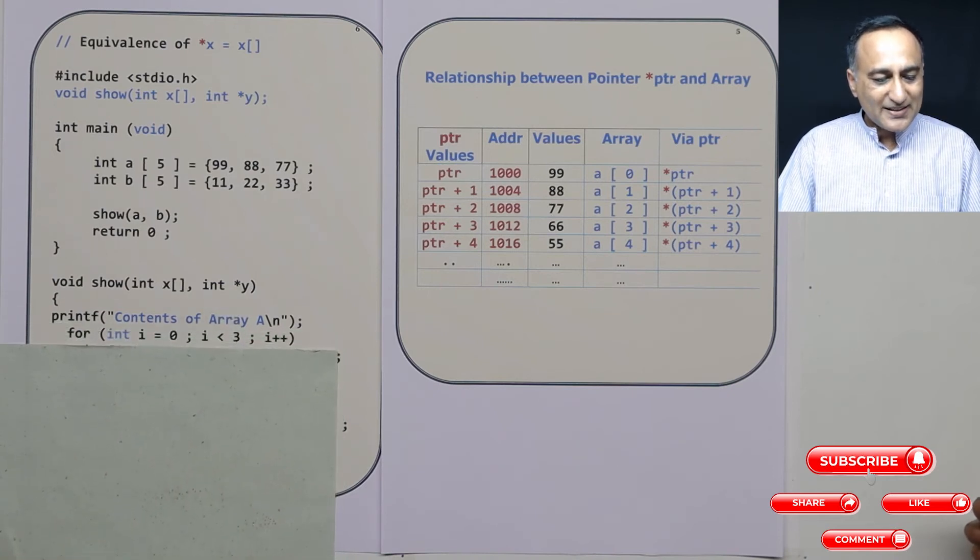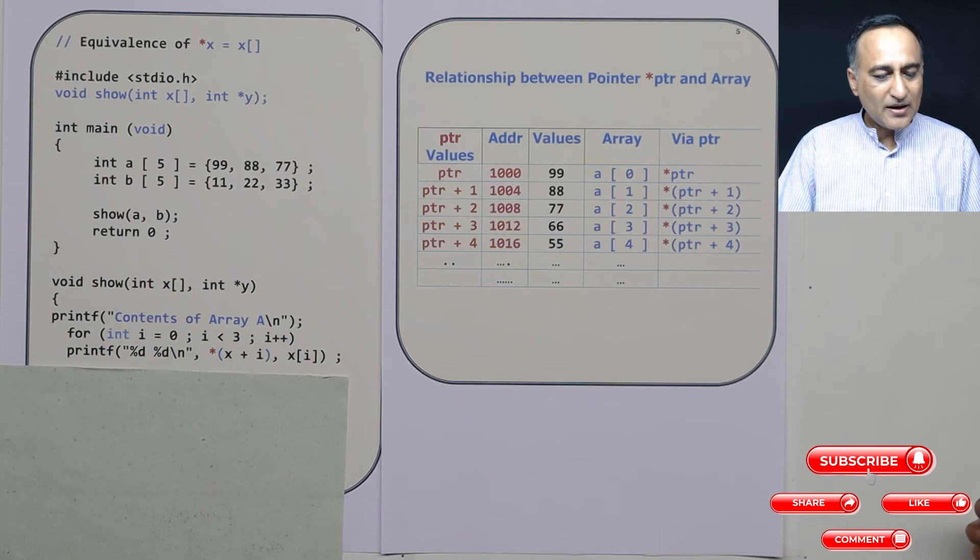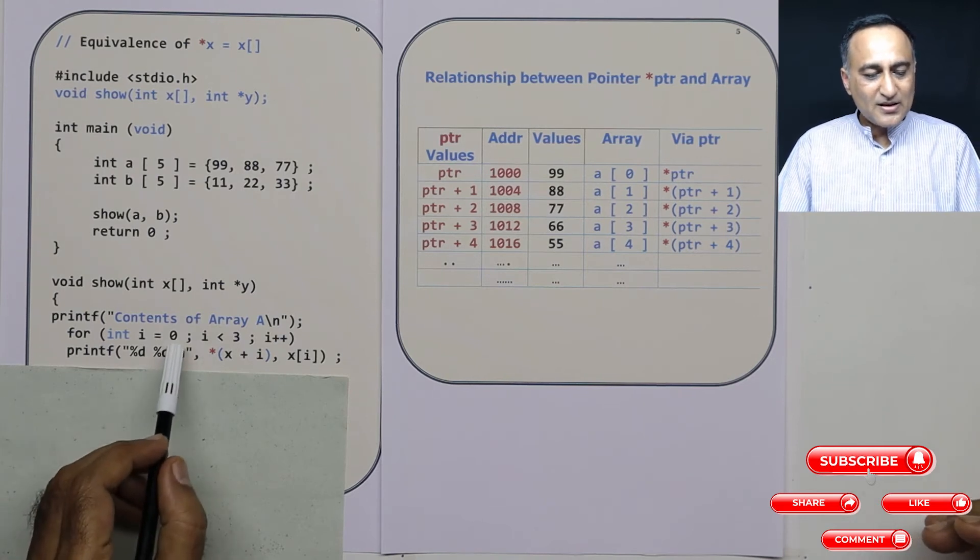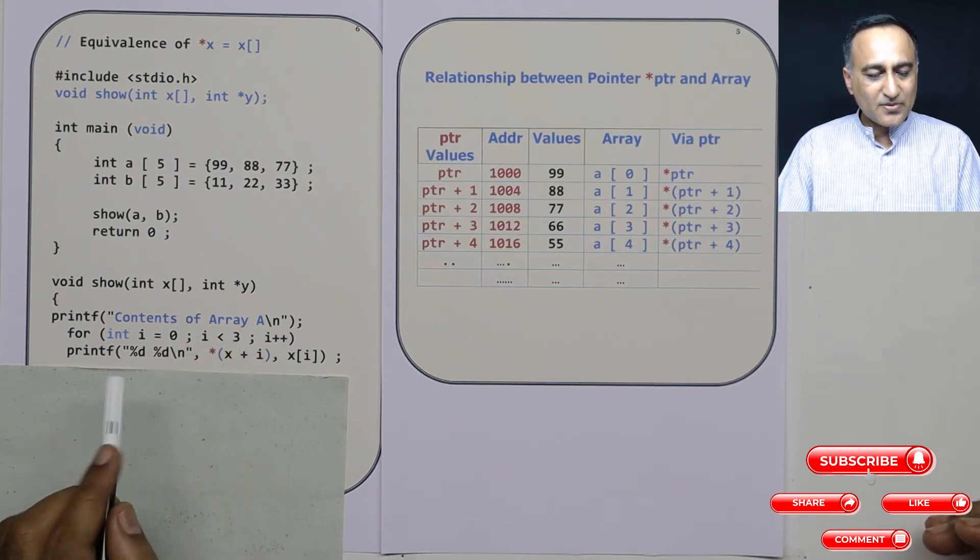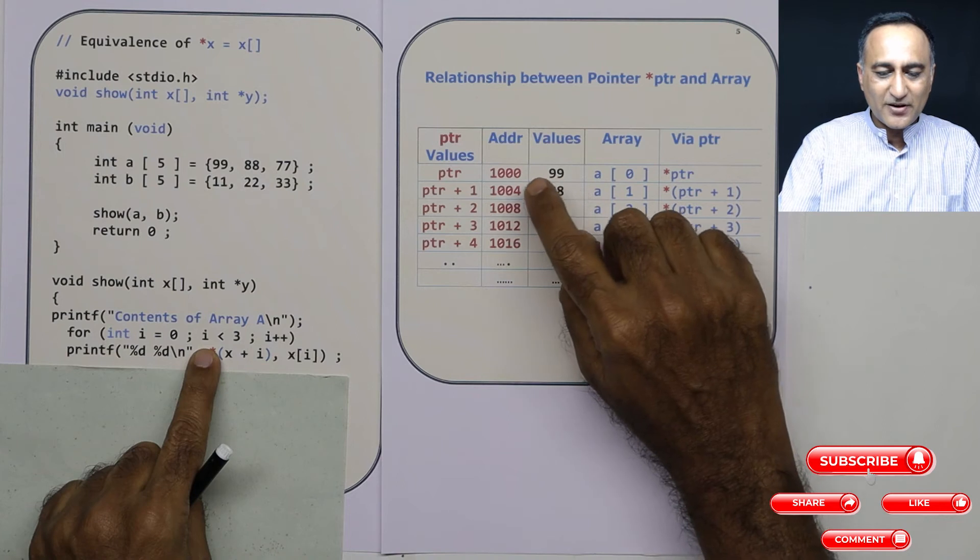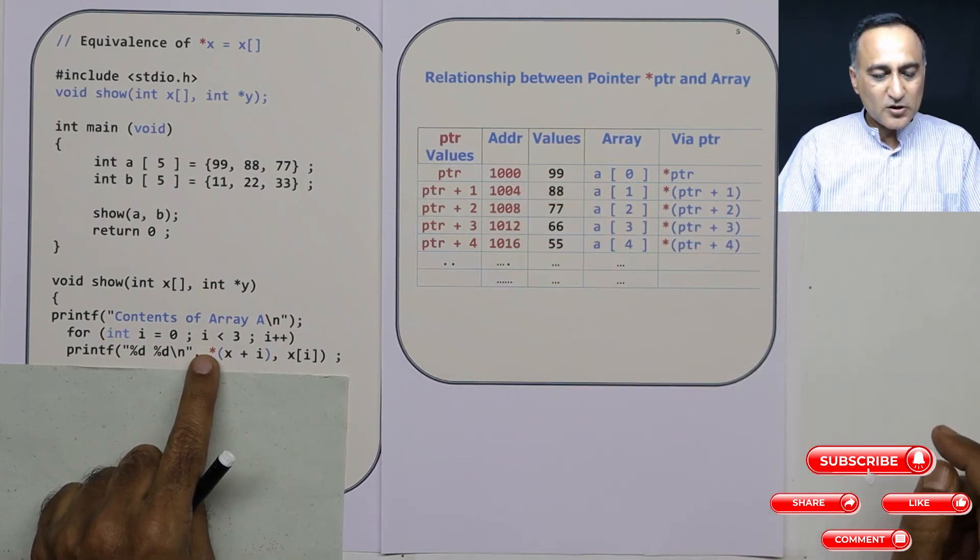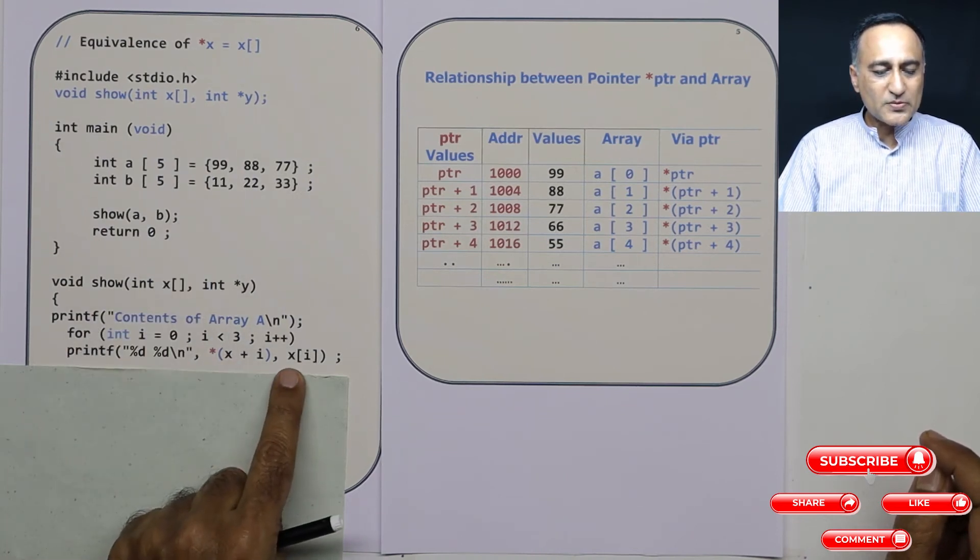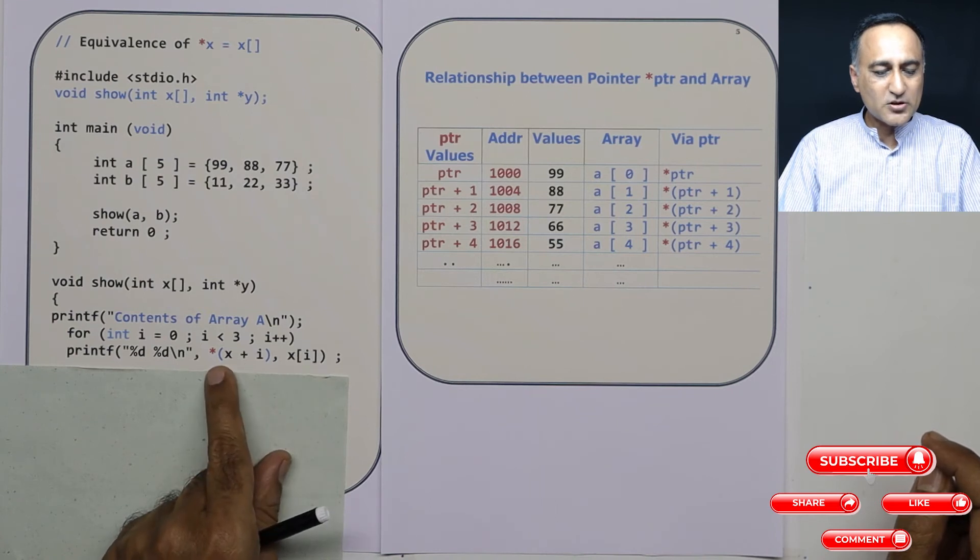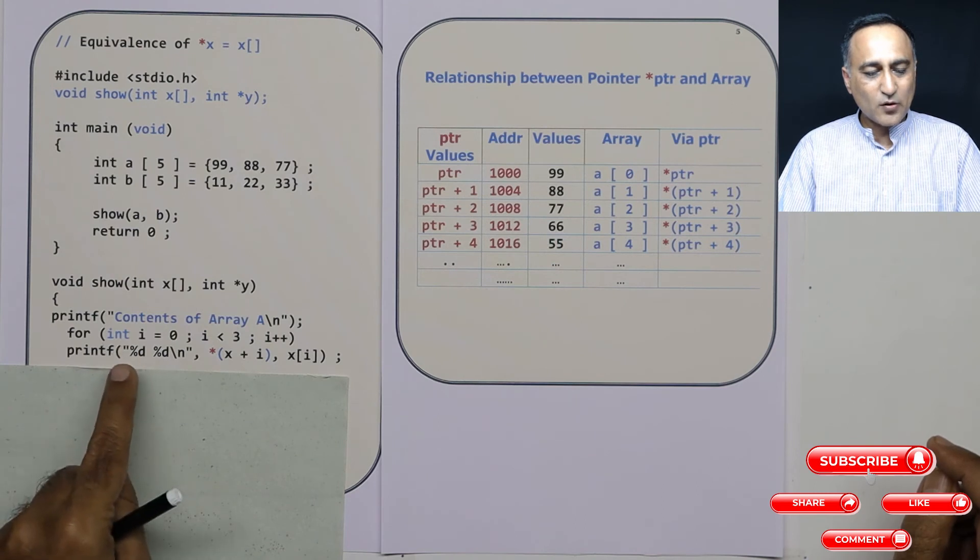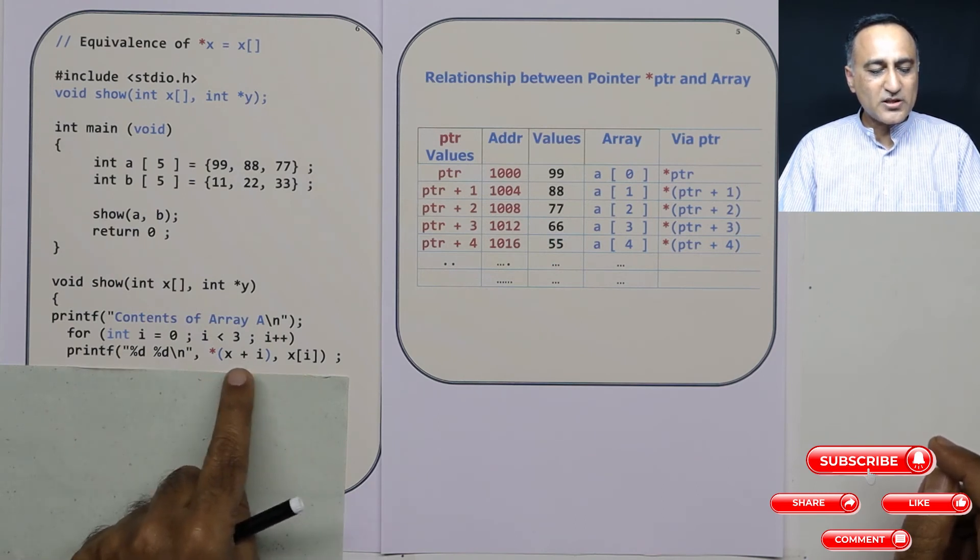So if I have to print the content of array a, I am showing you in two different ways how you can print the content of array a. Starting from i is 0 to i less than 3, if I say star x plus i, it is referring to a of 0 which is address thousand. So at the thousandth address what is the value it is going to print 99. Now I told you in the previous program x of i is internally converted to star x plus i. So these both are the same. Using this for loop I am going to print 99, 88 and 77. So you will see printing of x of i using two methods.